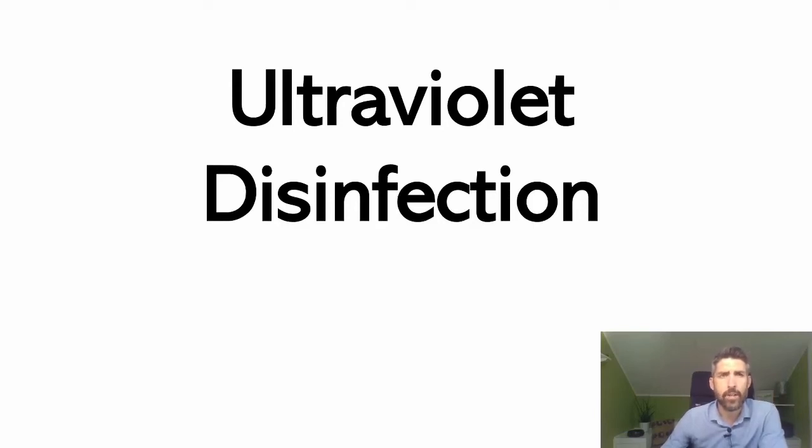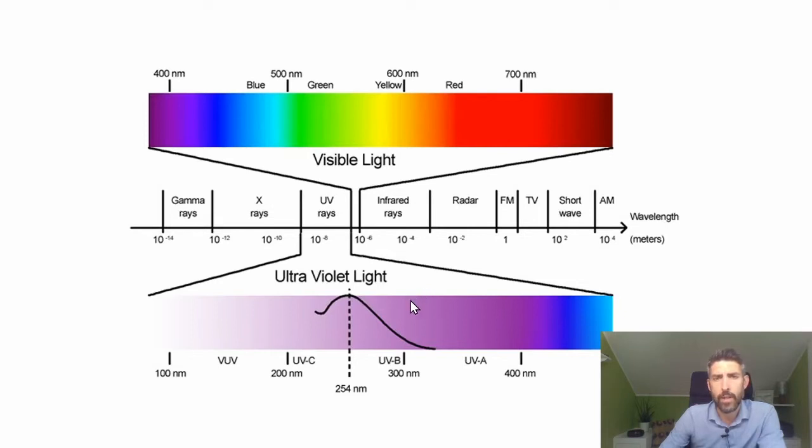Ultraviolet is a secondary disinfection system, which means it's not used on its own. It's secondary to a primary disinfection system, usually chlorine. So you wouldn't be able to just use ultraviolet without using a primary disinfection system. It's chlorine plus ultraviolet rather than ultraviolet instead of chlorine.